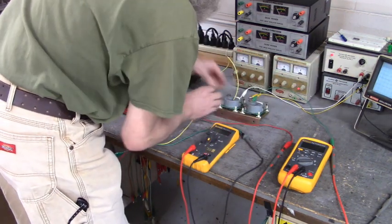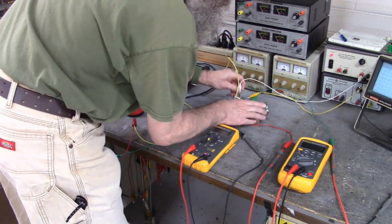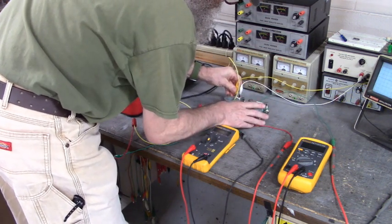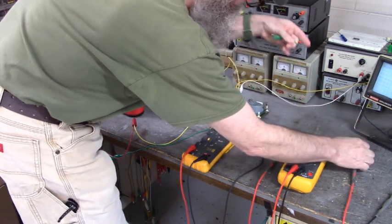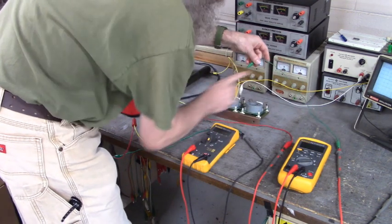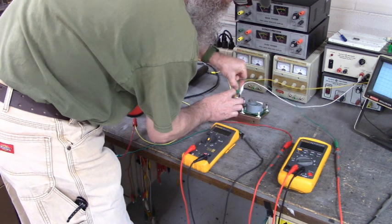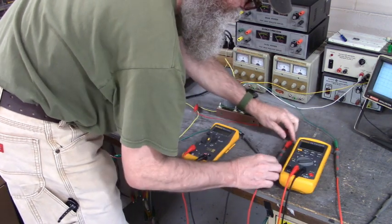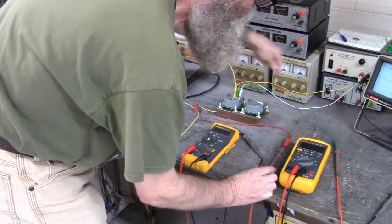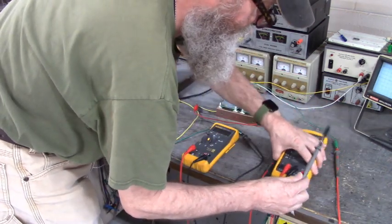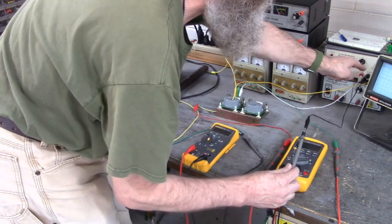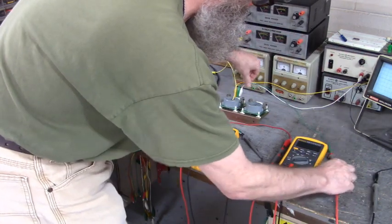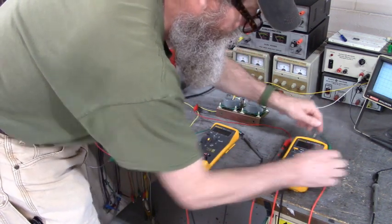Now I've got to hook up a plus and minus 15 volt DC power supply to the current sense module. This green wire is the output of the current sense module. Its output is in current. It's not voltage out, it's current out. So we have to set the second ammeter to current and the ground of the ammeter of this DMM goes to ground to that power supply. So we have plus 15, minus 15 and ground and the output of the current sense module goes to this ammeter right here.